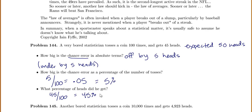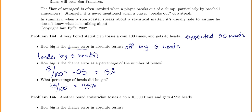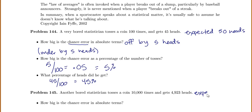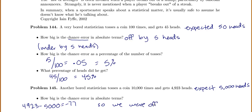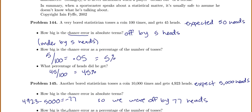Another bored statistician tosses a coin 10,000 times and got 4,923 heads. If he tossed it 10,000 times, we would expect 5,000 heads, since it's a fair coin and you expect about half heads. How big is the chance error in absolute terms? We expected 5,000 but we got 4,923, so 4,923 minus 5,000 is negative 77 — we were off by 77 heads, 77 heads below what we expected.